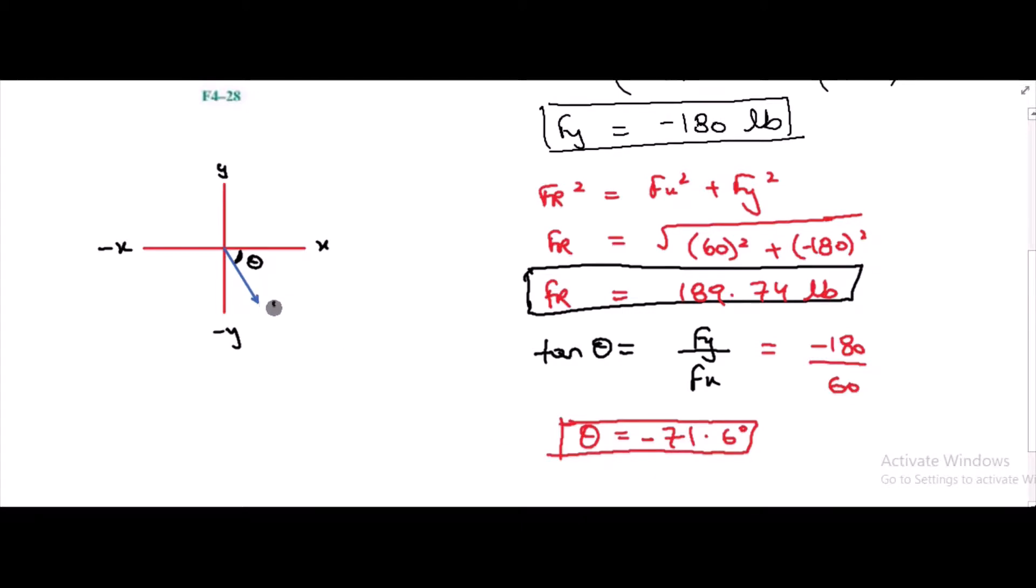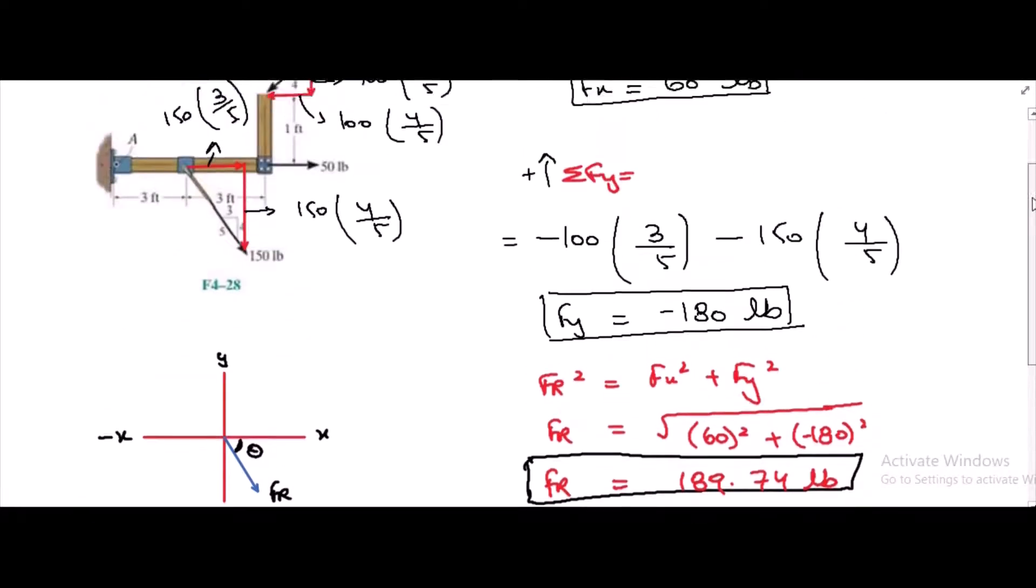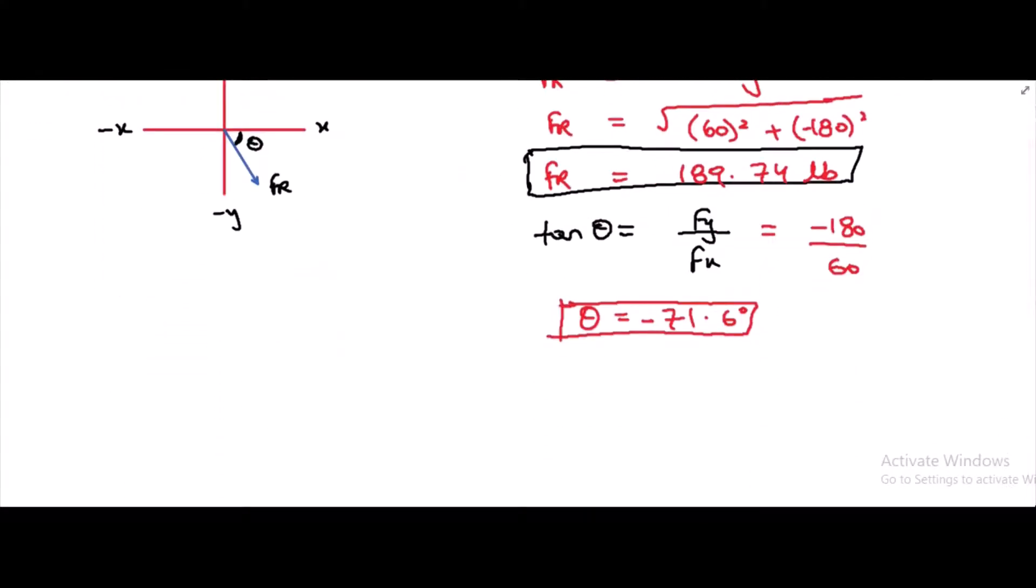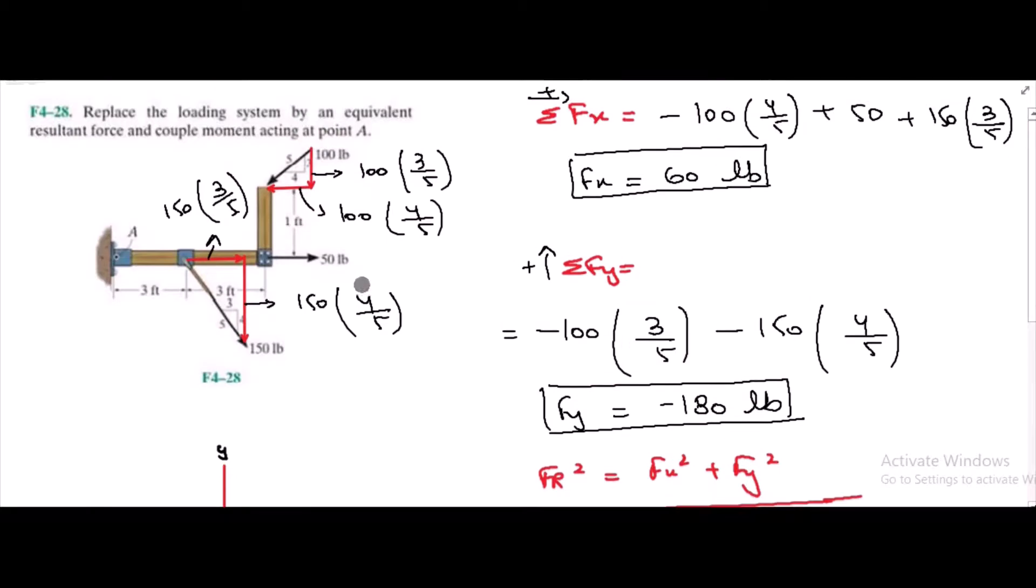Now for the couple moment at point A, we have to sum up all the moments about point A. We are considering clockwise direction as positive. If you look at the figure, the 50 lb force will not produce any moment about this point because it is passing through point A. Also, the horizontal component of 150 lb force will not produce any moment about point A because it is also passing through point A.